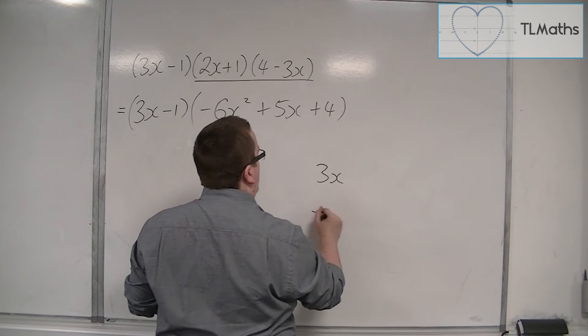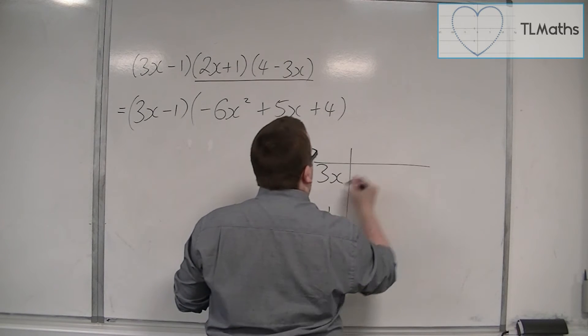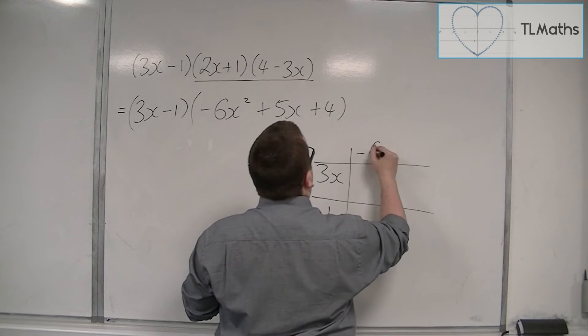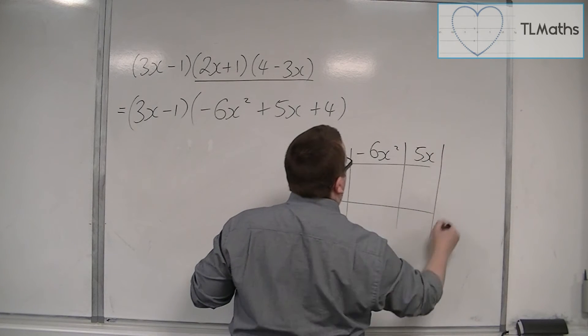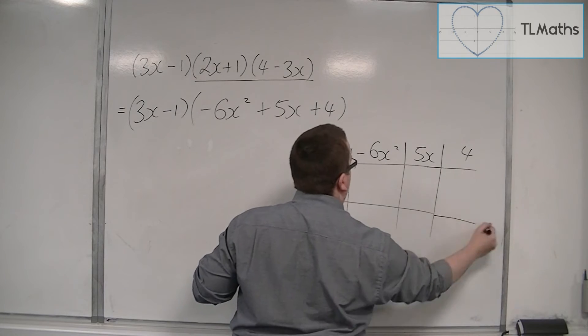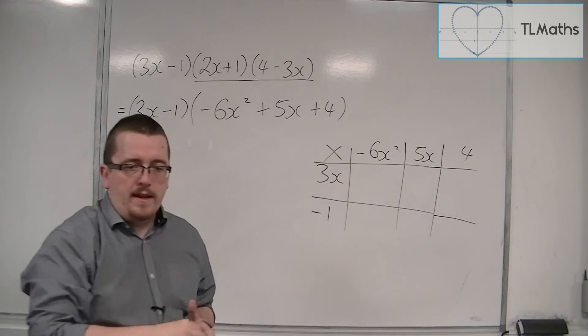So we've got 3x and minus 1, and we have minus 6x squared. We've got 5x and then we've got 4. Okay, so let me get another colour.